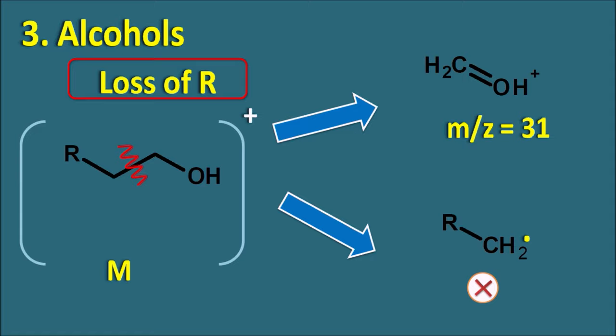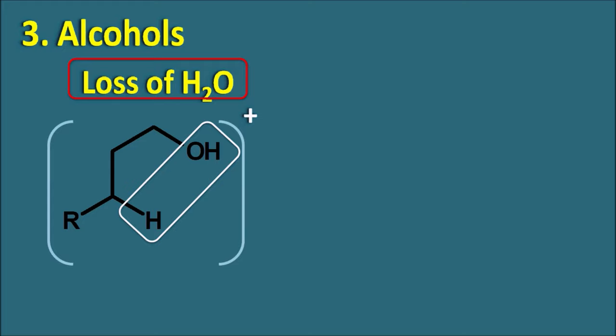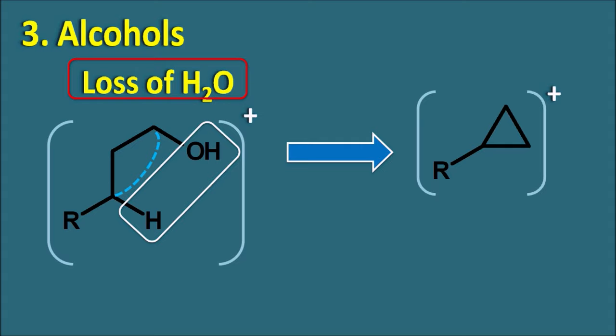Alcohols can also undergo another fragmentation pattern when they have a gamma hydrogen — this is due to loss of the water molecule. The OH group and hydrogen can be removed as a water molecule, forming a cyclic carbocation. This molecular ion then fragments to form a cyclopropane-derived cation. Since the water molecule is lost, if the molecular ion has mass M, the fragment ion will be at M minus 18. So the M-18 peak indicates loss of a water molecule and may indicate an alcohol.